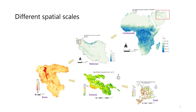The major point here is that at larger scale — at continental and national scale — we may have to use coarser resolution datasets like the MODIS dataset. And as we move from basin to field, we can use higher resolution datasets like Landsat for our analysis.